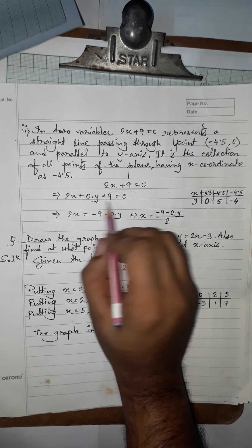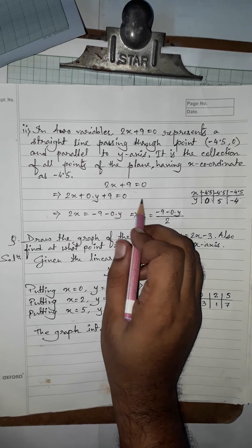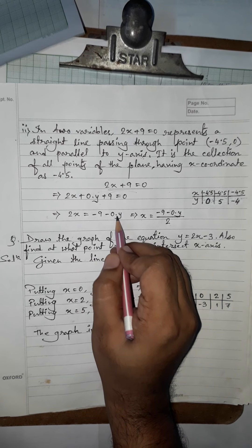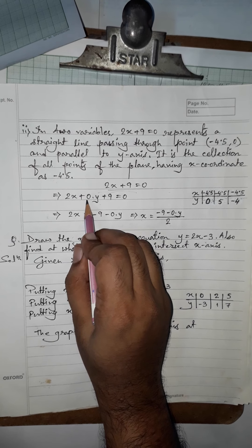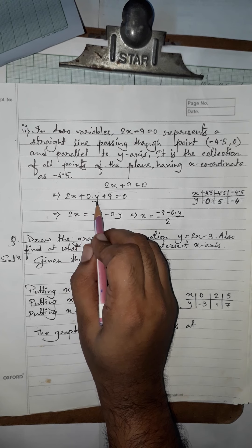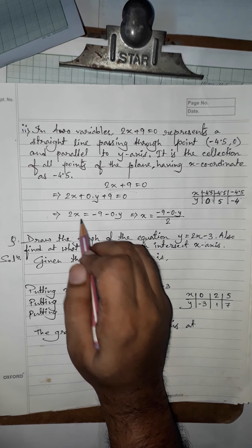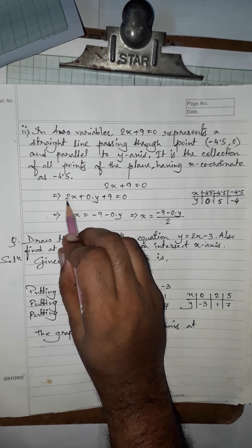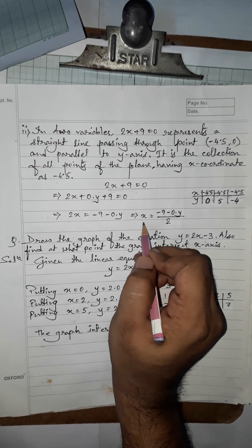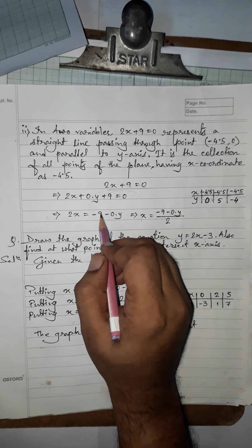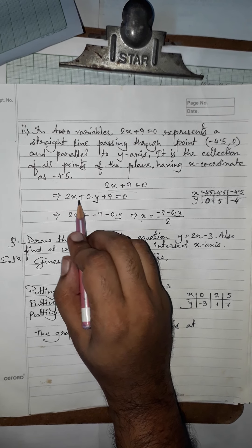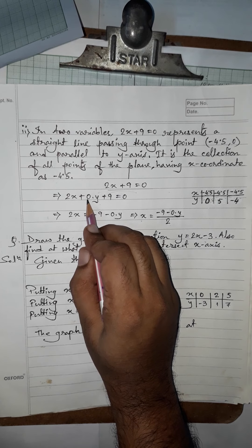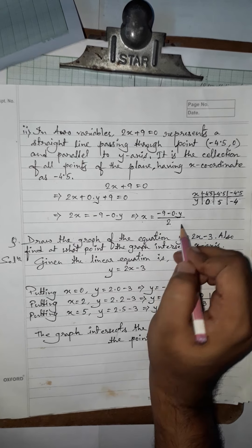Moving 9 and the y-part to the right side, we get 2x = −9 − 0·y. Since the coefficient of y is 0, we write it as x = (−9 − 0·y) / 2. Keep in mind: if the x-coefficient is 0, we represent it as y equals something; if the y-coefficient is 0, we represent it as x equals something.